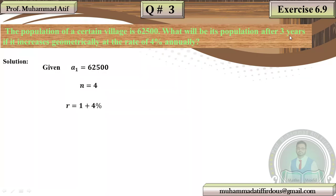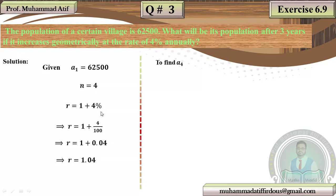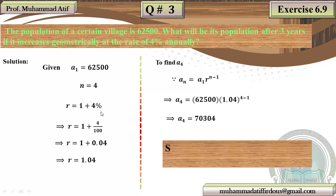Since the population is growing at 4% annually, R = 1 + 4/100 = 1.04. Using the geometric progression formula A_N = A1 × R^(N−1), replacing the values of N, A1, and R, and using your calculator, the population after 3 years is 70,304. If you understand the question statement, just apply the formula and the answer comes automatically.